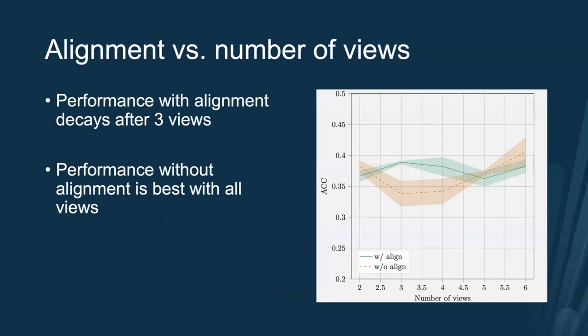Specifically regarding alignment, in this figure we have a dataset with six views and we add views incrementally from two to six. The green curve shows the performance of an alignment-based method, and you can see that it performs best with three views — performance actually decreases after adding more views. This is not the case for the method without alignment, which has its best performance when all views are included.